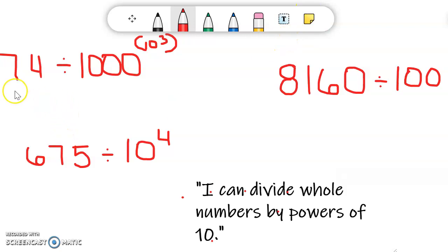So we have our first equation in the top left hand corner of the screen: 74 divided by 1000, or you could also say it's 74 divided by 10 to the third power.